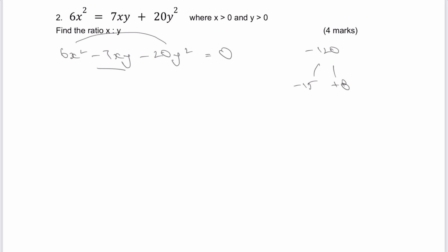So what I'm going to do is rewrite this as 6x squared, and rather than writing minus 7xy, I'm going to write minus 15xy plus 8xy, and then negative 20y squared, and that equals zero.